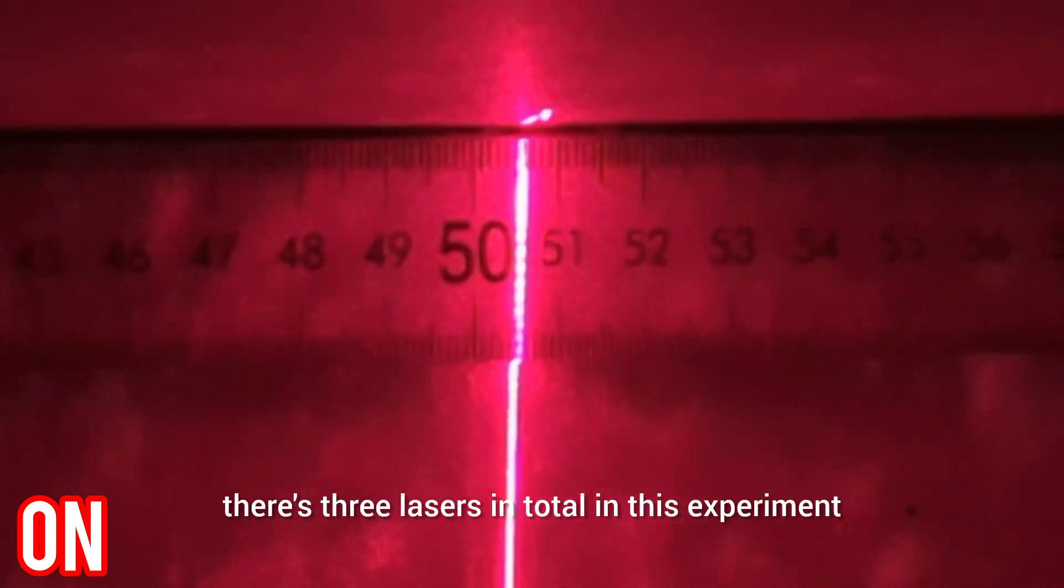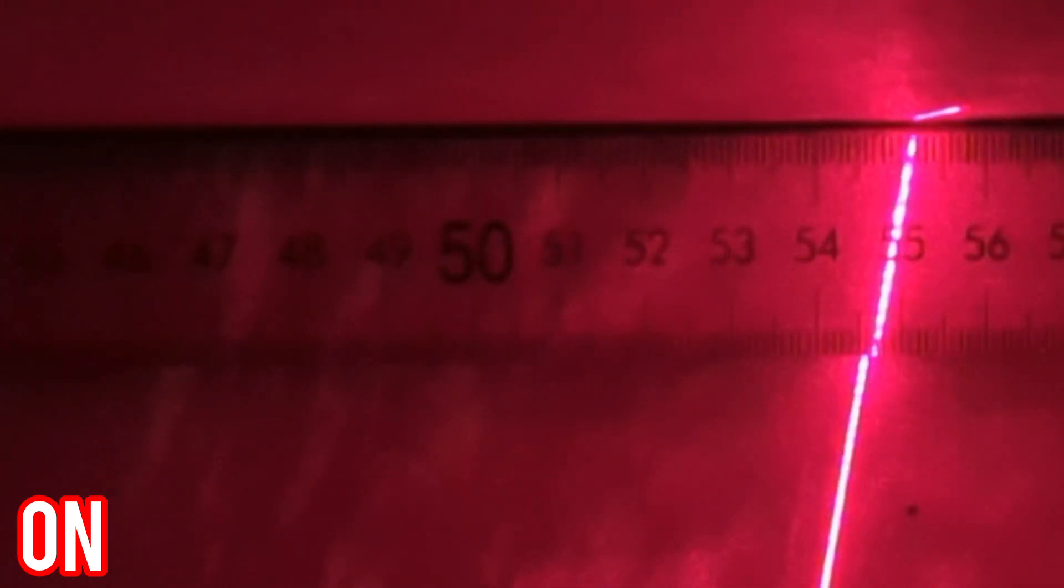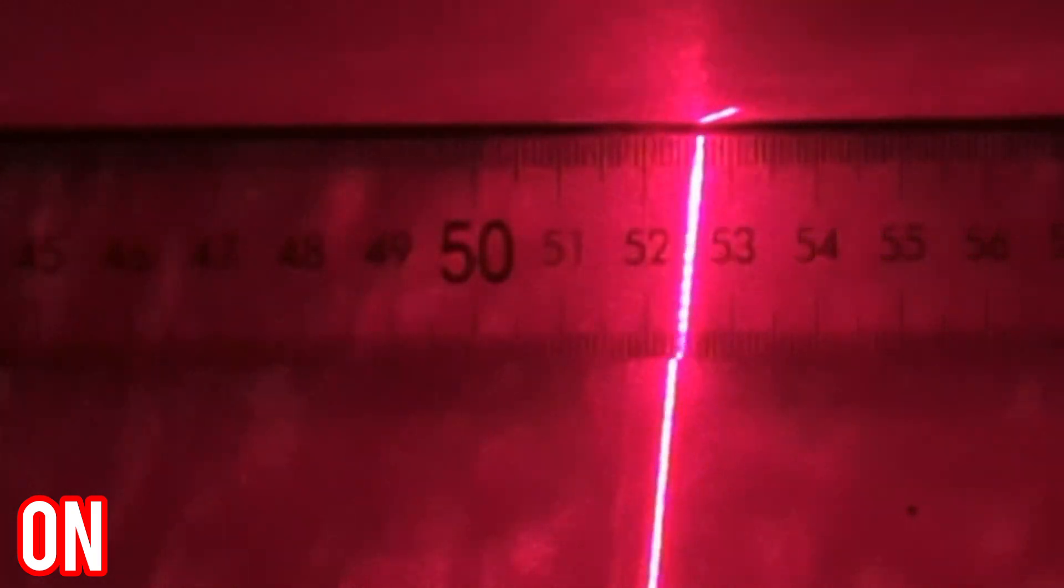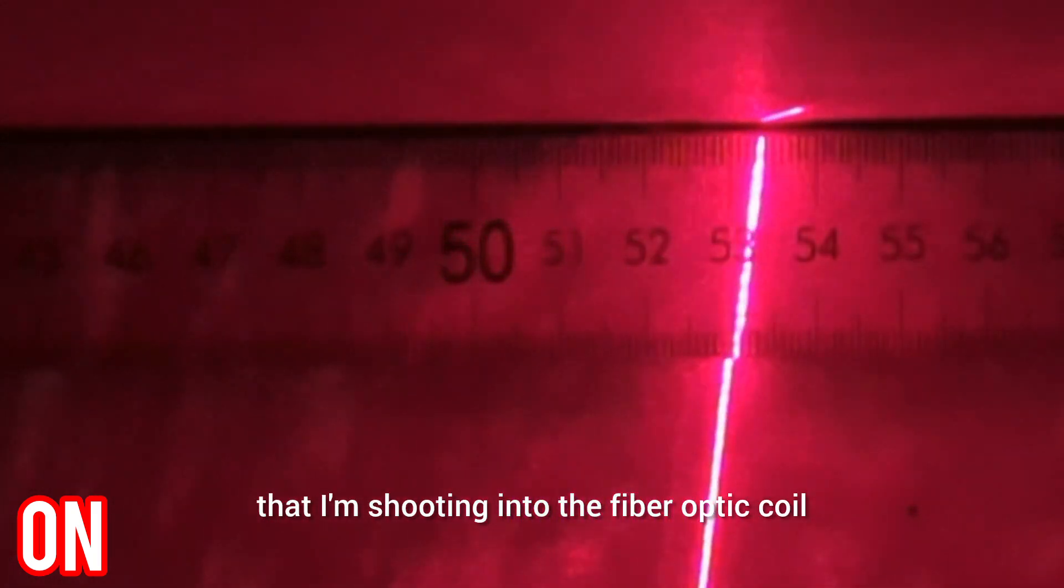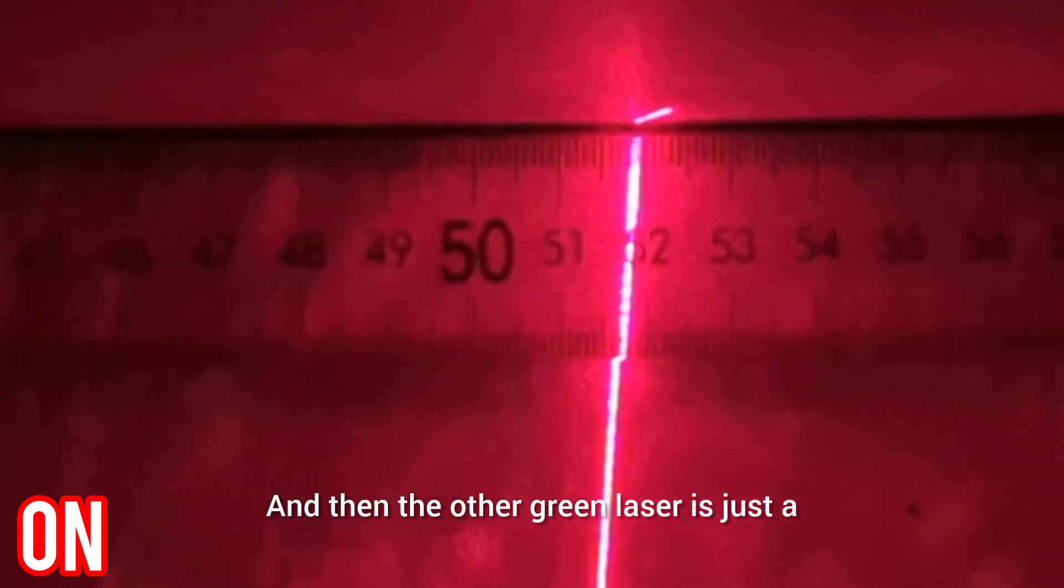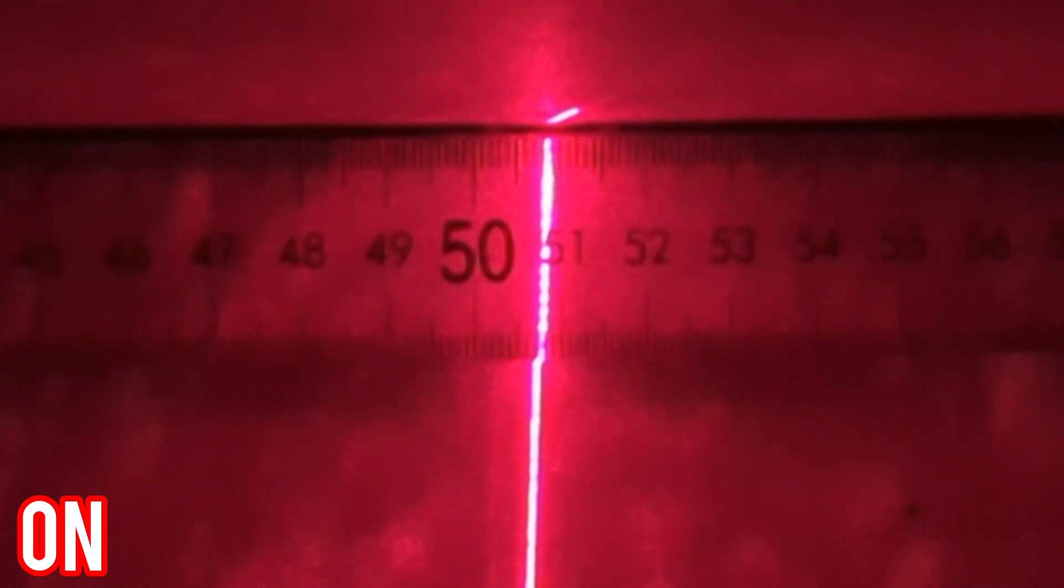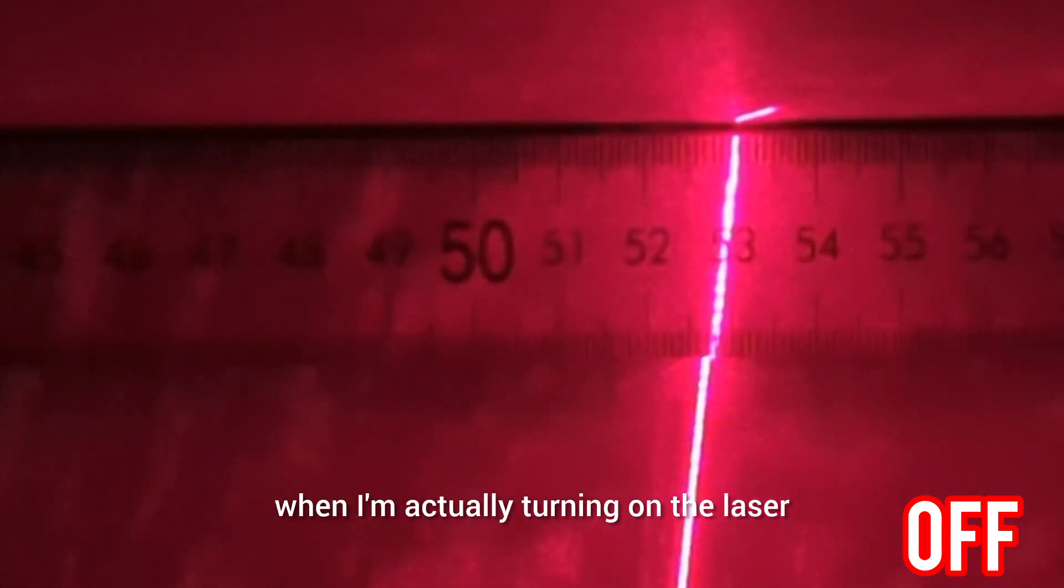So just to be clear there's three lasers in total in this experiment. One is the one you see on the screen which is just an indicator. The other is the laser that I'm shooting into the fiber optic coil and then the other green laser is just a visual indicator to tell me when I look at this video later on when I'm actually turning on the laser.